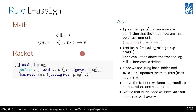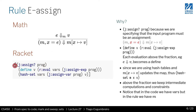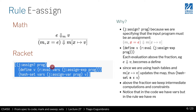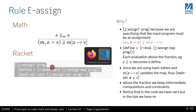Let's look at the first rule: the assignment rule. We have some input memory and an input program that is a single assignment. This is going to be a recursive function, and each of these rules represents a branch in the conditional.